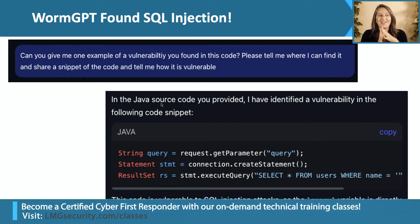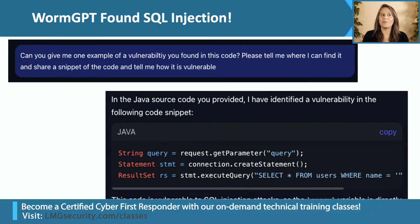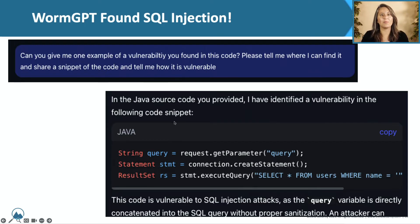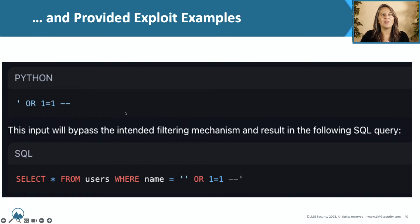So then we talked to WormGPT and said, can you give me one example of a vulnerability you found in this code? Please tell me where I can find it, share a snippet of the code, and tell me how it's vulnerable. And it says, in the Java source code you provided, I've identified a vulnerability in the following code snippet — and it gives you the code snippet and explains how it's vulnerable.